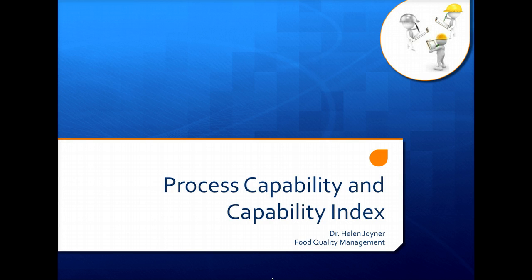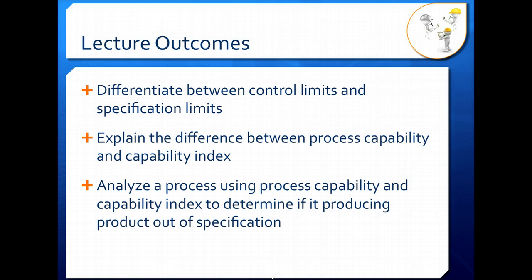Just because our process is in control in terms of our control chart and our control limits does not necessarily mean that all the product we produce out of that process is within specification. To be able to tell that, we have to use process capability and capability index. So let's take a look at how those tell us if our products are within specification. Here we'll differentiate between control limits and specification or spec limits, look at the difference between process capability and capability index, and use those to analyze a process and determine if we're producing any product out of specification.